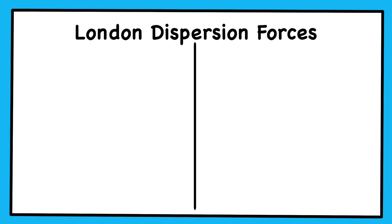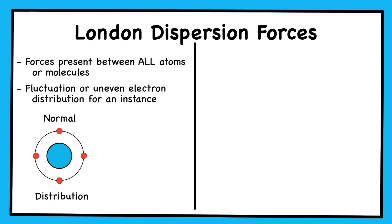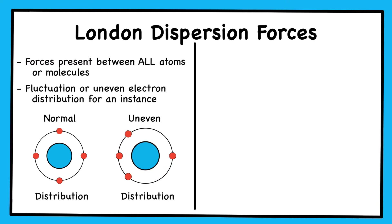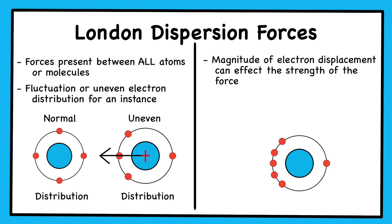London dispersion forces are forces present between all molecules or atoms. These forces are a result of a fluctuation of electron distribution within a molecule or atom. Since all atoms have electrons present within them, this force is present within every molecule. The electrons in an atom or molecule may at any one instant be unevenly distributed throughout the atom or molecule, thus creating a temporary polar molecule or atom. This temporary dipole may only last an instant, but it is enough to create a weak attractive force. The magnitude of these electron displacements can also influence the strength of the dipole and consequently the strength of the dispersion force.